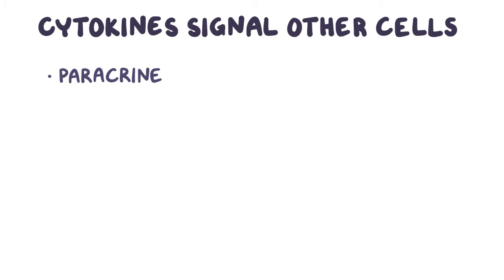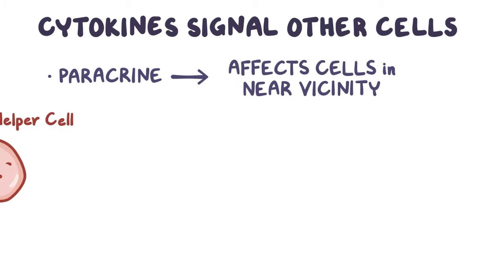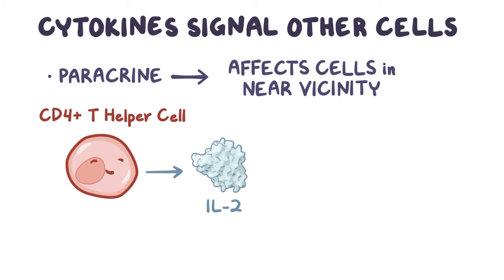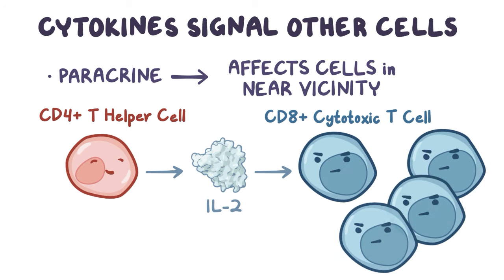Paracrine means that the cytokine is produced by one cell and that it affects cells in the near vicinity. Once again, an example is interleukin-2, because it helps nearby CD8-positive cytotoxic T cells proliferate. That's important because the CD8-positive cytotoxic T cells aren't good at making their own interleukin-2.